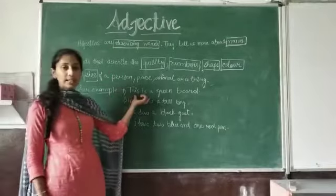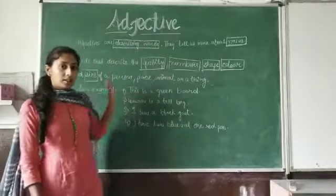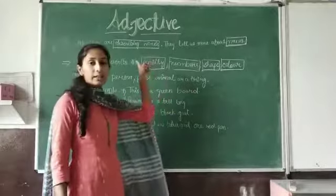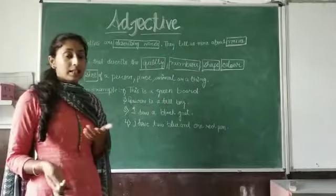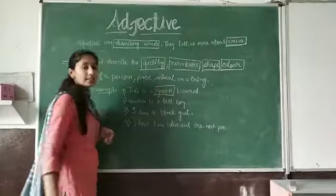Example number one is this is a green board. You can see this is a green board. So what is green here? Green describes the color of the board. Green is an adjective in this sentence.